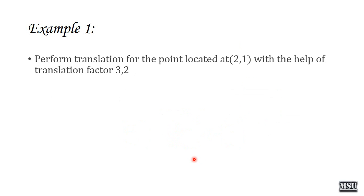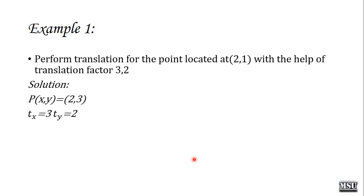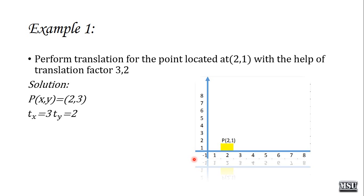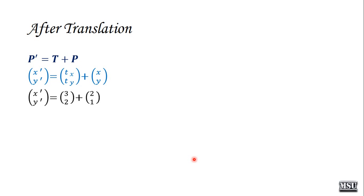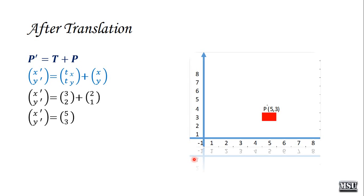Let us discuss an example. Perform a translation for the point located at (2, 1) with translation factor (3, 2). The original point p is (2, 1), tx = 3, ty = 2. Using the formula p dash = t + p: [x dash, y dash] = [3, 2] + [2, 1] = [5, 3]. So after translation, the point is now located at (5, 3).